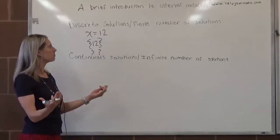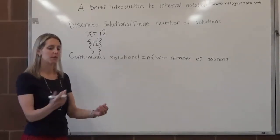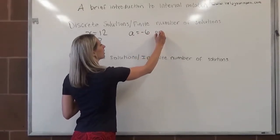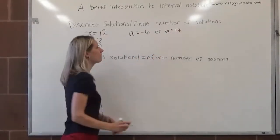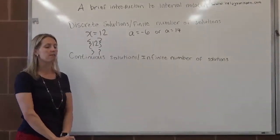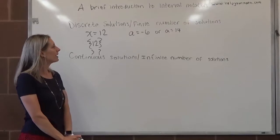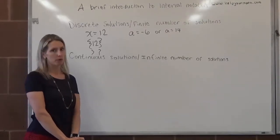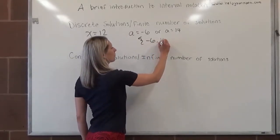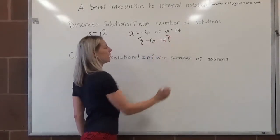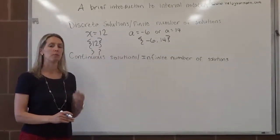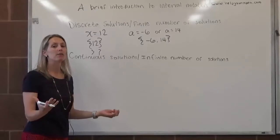We can also do this if there's more than one solution. Let's say we end up getting a equals negative 6 or a equals 14. If we have more than one solution but still a finite number, we write them in the braces in order from least to greatest. So I would open up the braces and put negative 6, then 14, going from least to greatest. When there's a finite number of solutions, we put them in order from least to greatest inside a set of braces.